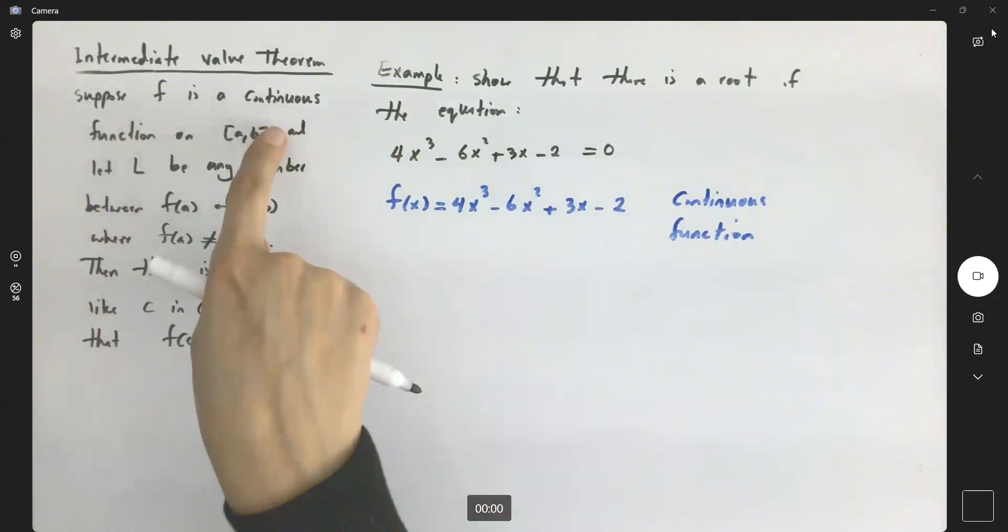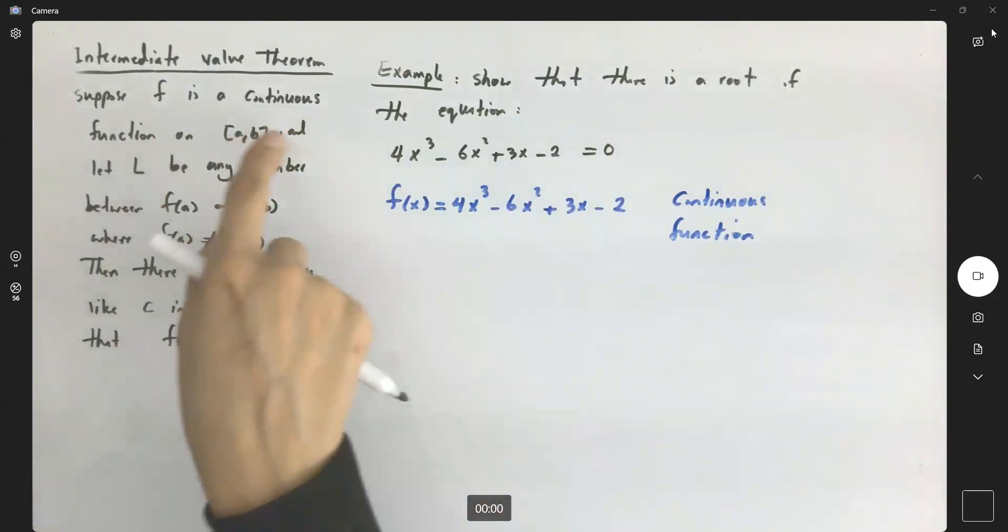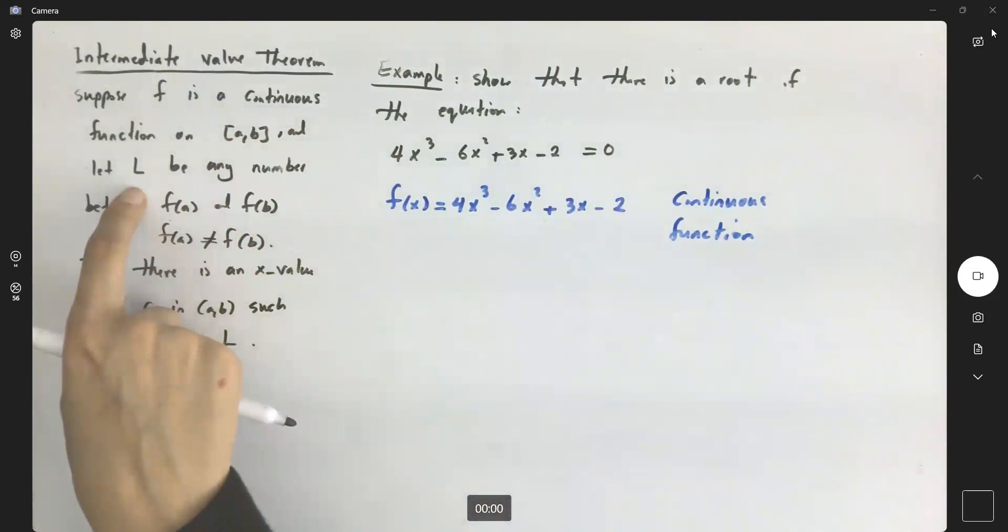Using the Intermediate Value Theorem, since this function is continuous on ℝ and definitely on any closed interval, for any y-value like L, we can definitely find an x-value, like c, such that f(c) = L.